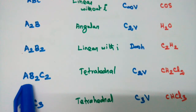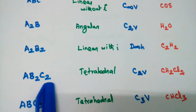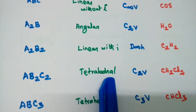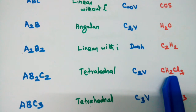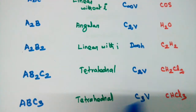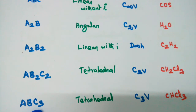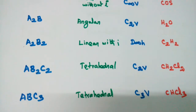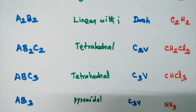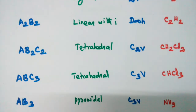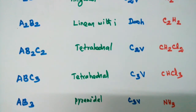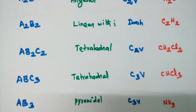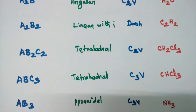General formula AB2C2, geometry tetrahedral, point group C2v, example CH2Cl2. Next, ABC3 tetrahedral, point group C3v, example chloroform CHCl3. Next, AB3 pyramidal, point group C3v, example ammonia.